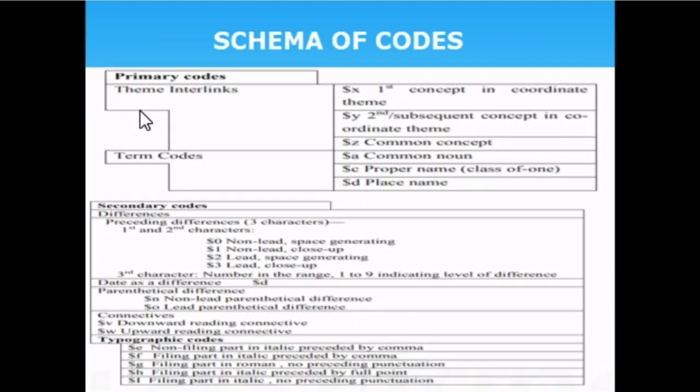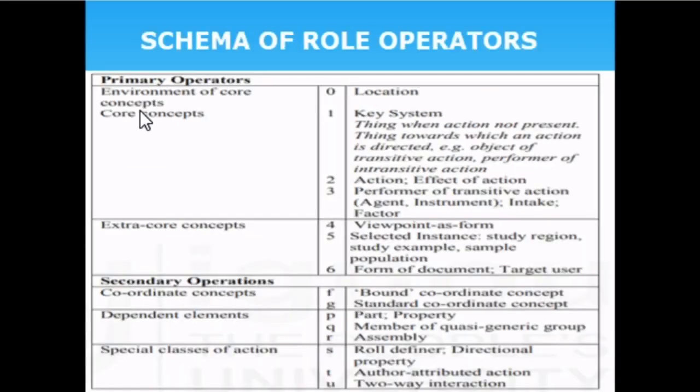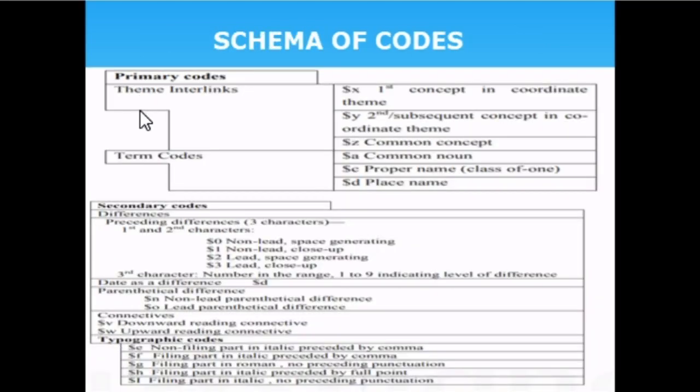There are three types of codes: primary, secondary, and typographic. The function of a code is to express the thought content. Role operators play a vital role in determining the role of the document, whereas a code is used to express it. The use of codes in the string brings expressiveness to the resulting index, so the thought content is expressed in such a way that the index wholly represents the subject matter.